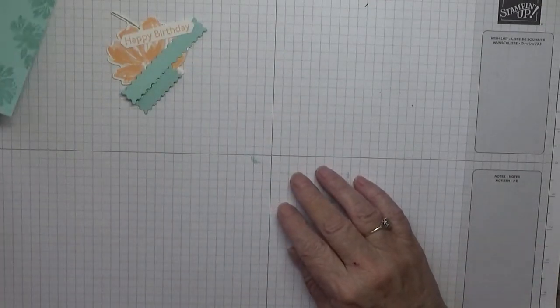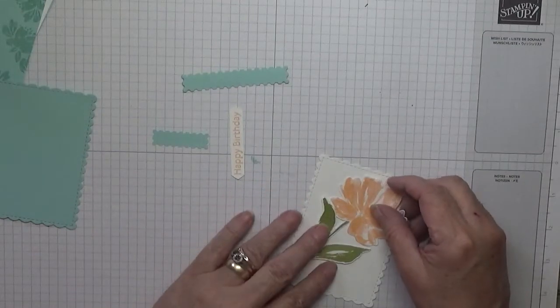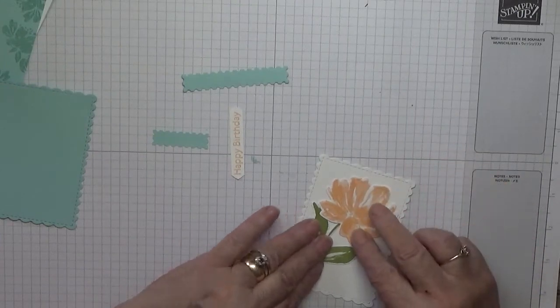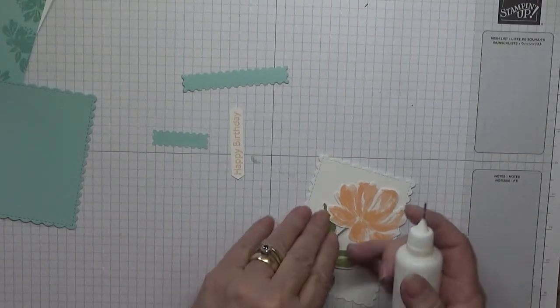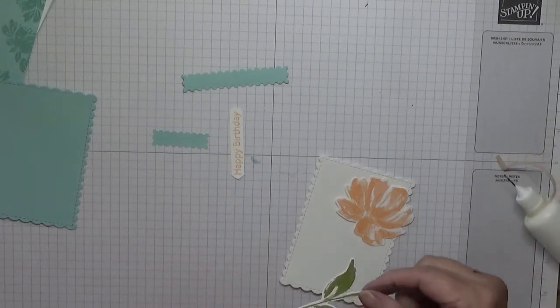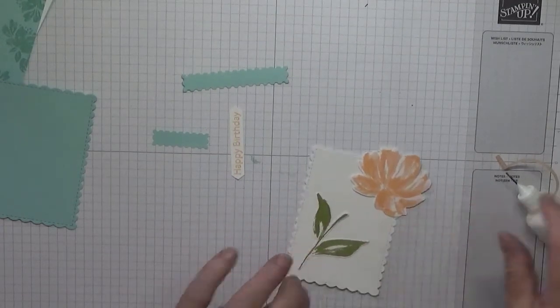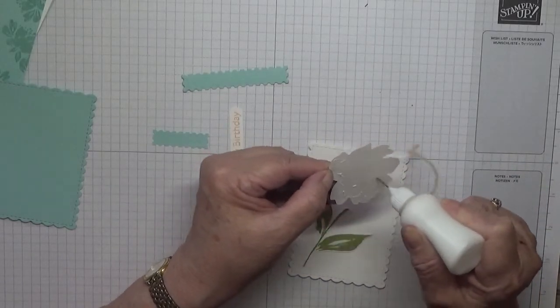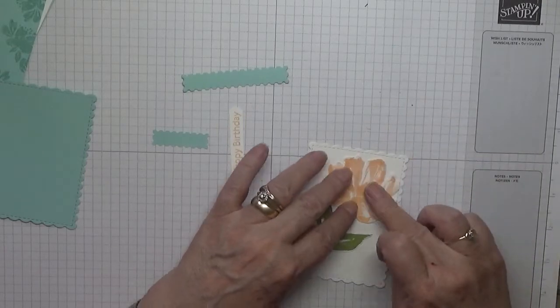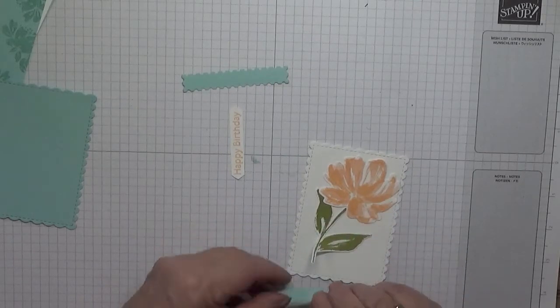Now we can start decorating our card. That's going to go down like that, and that'll be on there like that, it's all on the white. And I'm just going to glue this down. That's going to go there. I know what I forgot - I forgot to add these, so let me lift this up quickly, and this one.